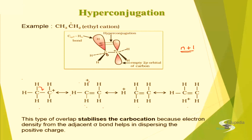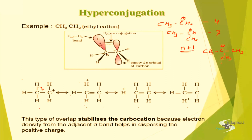Recall that as we move from primary to secondary to tertiary carbocation, the stability increases. In a primary carbocation, there are 3 alpha hydrogens, giving 4 hyperconjugating structures. In a secondary carbocation, there are 6 alpha hydrogens, giving 7 hyperconjugating structures. In a tertiary carbocation, there are 9 alpha hydrogens, giving 10 hyperconjugating structures. Higher the number of hyperconjugating structures, higher is the stability. That is why a tertiary carbocation is more stable than secondary, which is more stable than primary, which is more stable than the methyl carbocation.